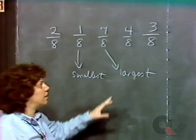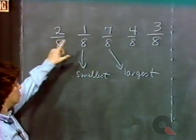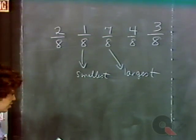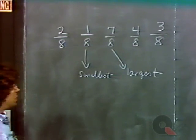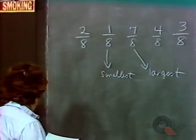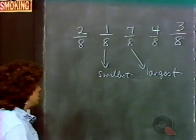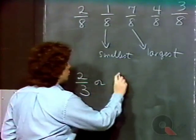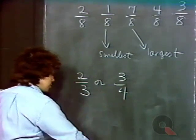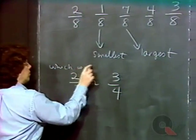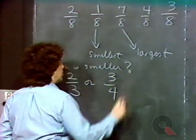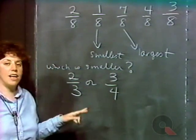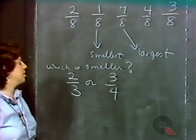What made this particularly easy is that they all have the same denominator. So the smallest numerator determined the smallest fraction, the largest numerator determined the largest fraction. However, on the assessment test, the fractions will probably have different denominators. If fractions have different denominators and you want to determine which one is smaller — say two-thirds or three-quarters — one thing you might do is turn these into equivalent fractions having the same denominator, and then compare.